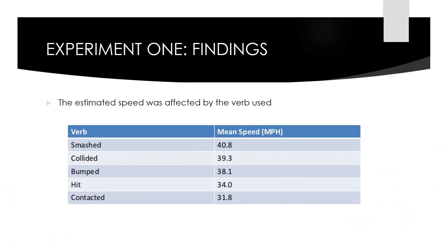After running the first experiment, they found that the estimated speed was affected by the verb that was used. The verb implied information about the speed, which systematically affected the participants' memory of the accident. The participants asked using the verb 'smashed' thought the cars were going faster than those asked using 'hit.' The smashed condition reported the highest speed estimate at 40.8 mph, followed by collided at 39.3 mph, bumped at 38.1 mph, hit at 34 mph, and contacted at 31.8 mph.